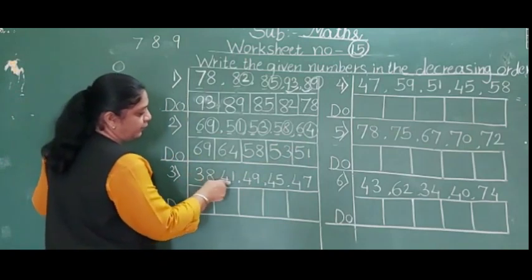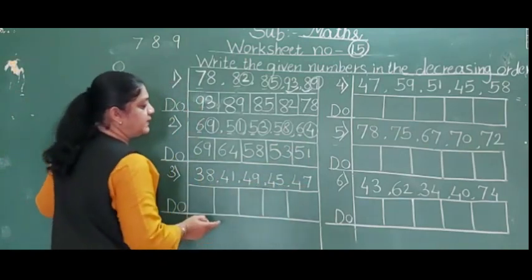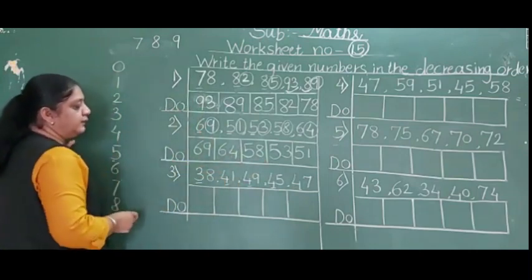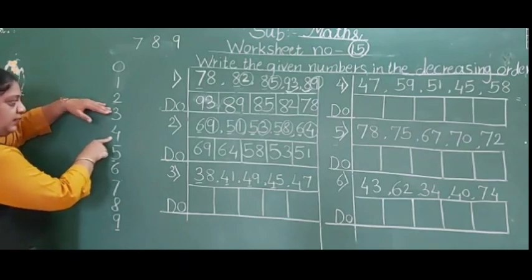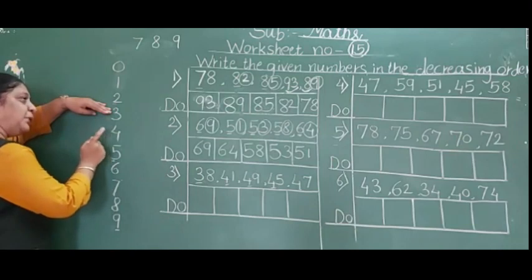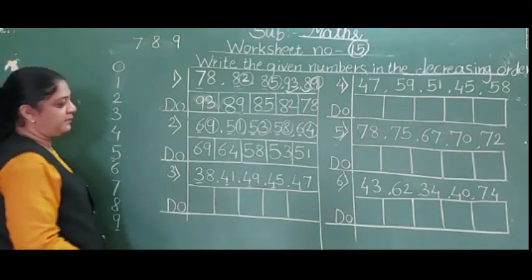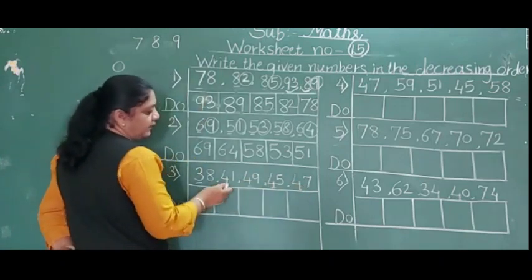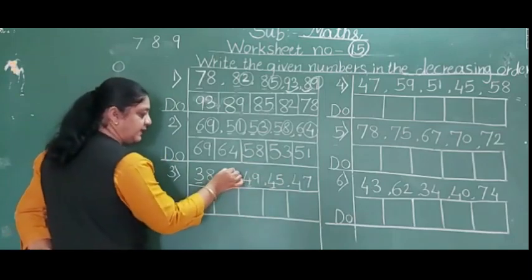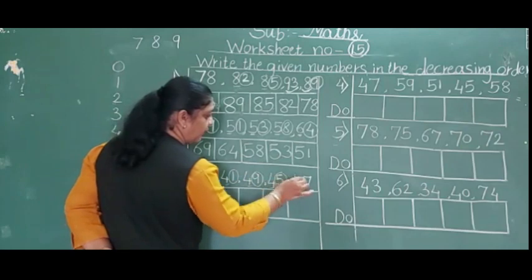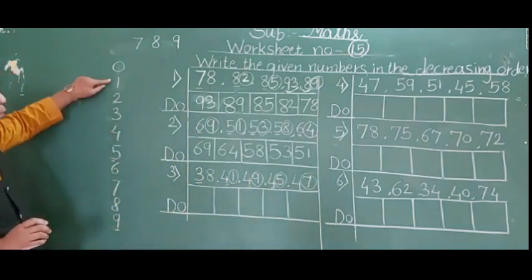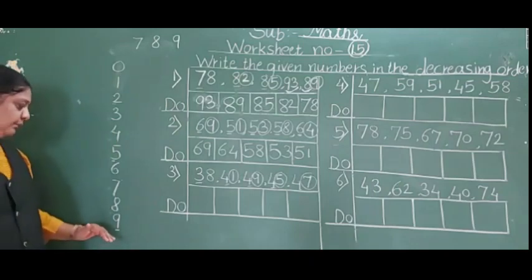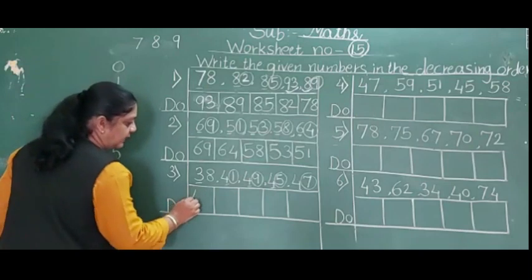Third descending example: 38, 41, 49, 44 and 47. First digits: 3 and 4. 3 is above and 4 is below. Below numbers are big, so 4 is the big number. The 4-group: 41, 49, 44 and 47. Second digits: 1, 9, 5 and 7. Which is below? 9 is below, so 49 is the big number and comes first.